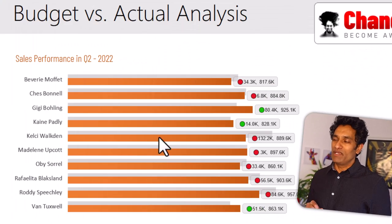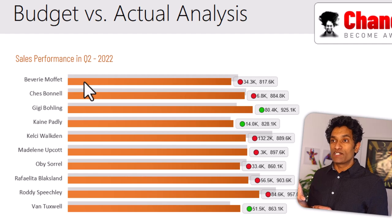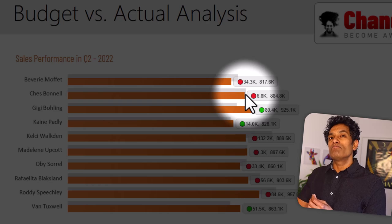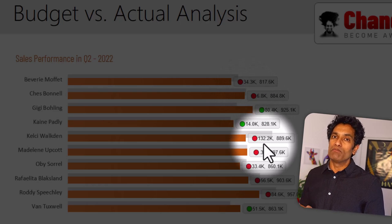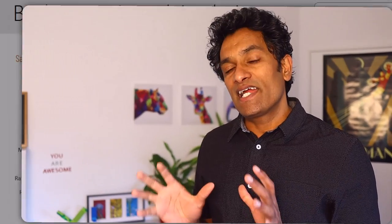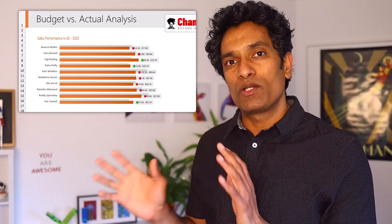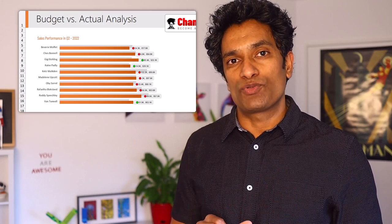It was kind of vague, but I gave it my best try. Here is the chart that I made. It clearly tells us how each of our salespeople did, what the target was, what the variance is, and whether somebody met or not met their targets using green or red bubble indicators. Let's understand how you can create such an awesome actual versus target chart using Microsoft Excel.